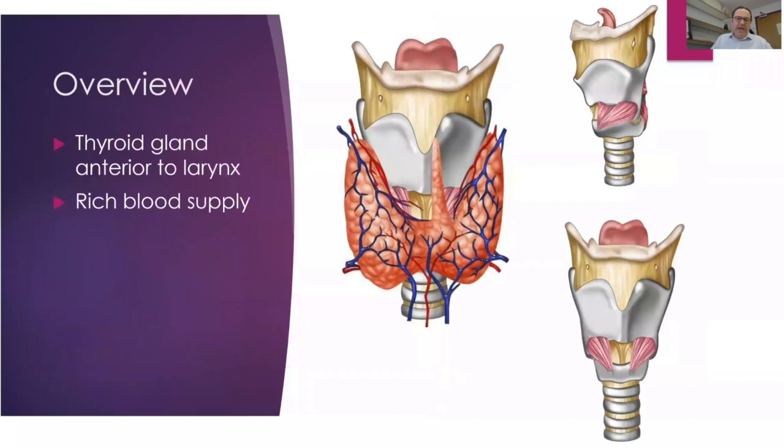Anteriorly to the larynx there is the thyroid, which has a very rich blood supply. This becomes particularly relevant if you are considering an emergency airway — you need to be aware of the thyroid isthmus, whether there is a goiter, etc. It's something to keep in mind in that emergency, middle-of-the-night situation.